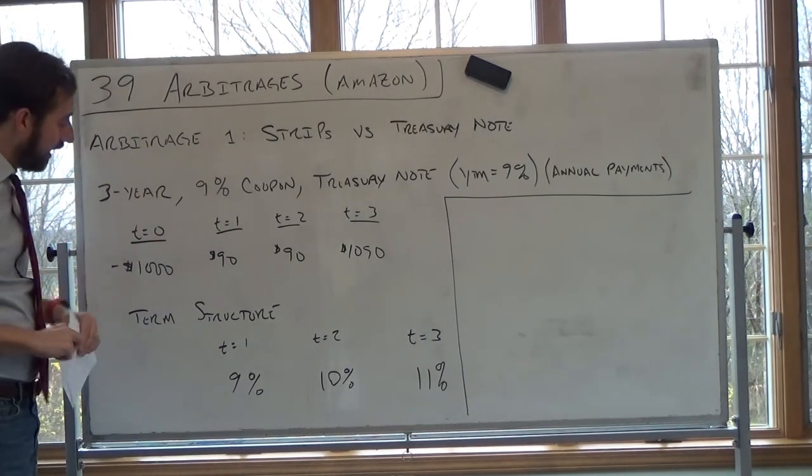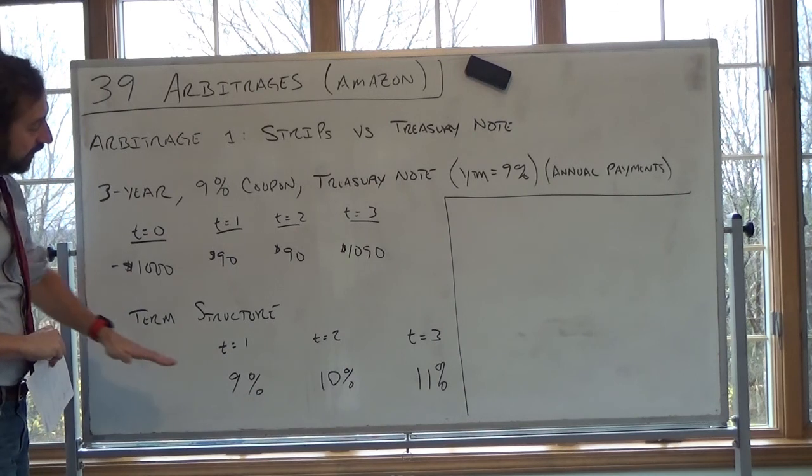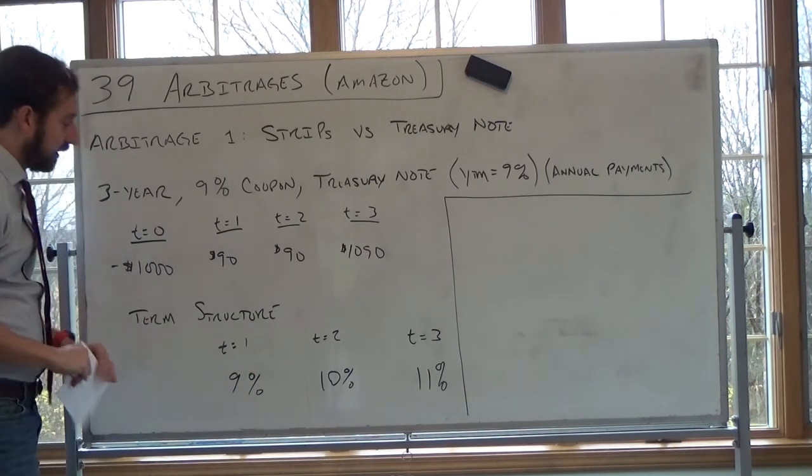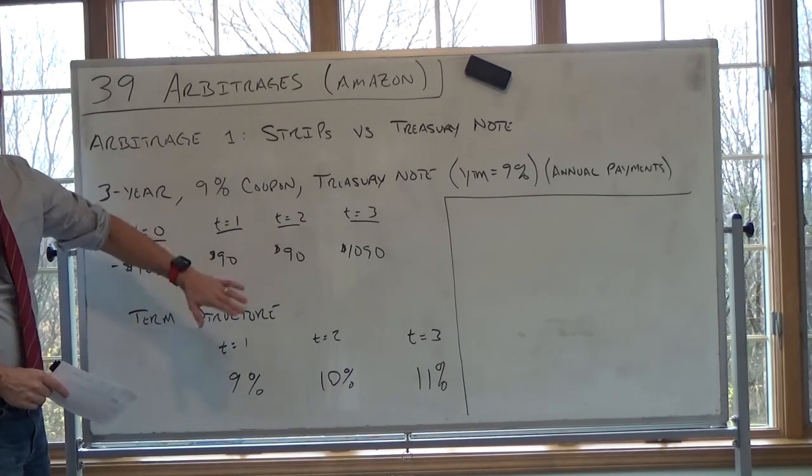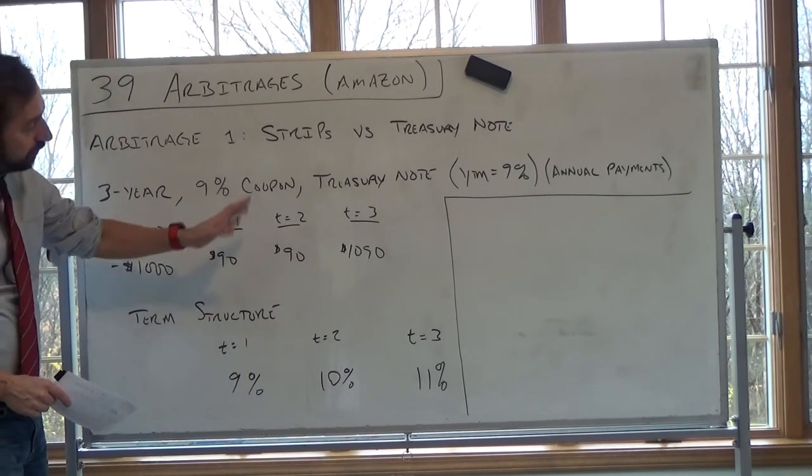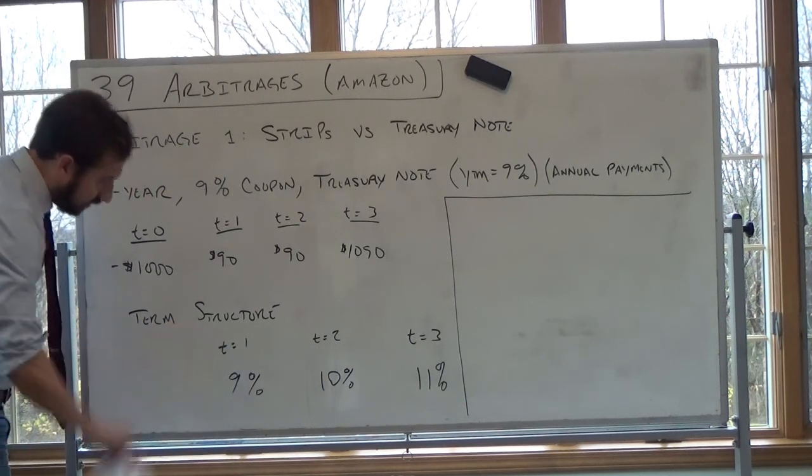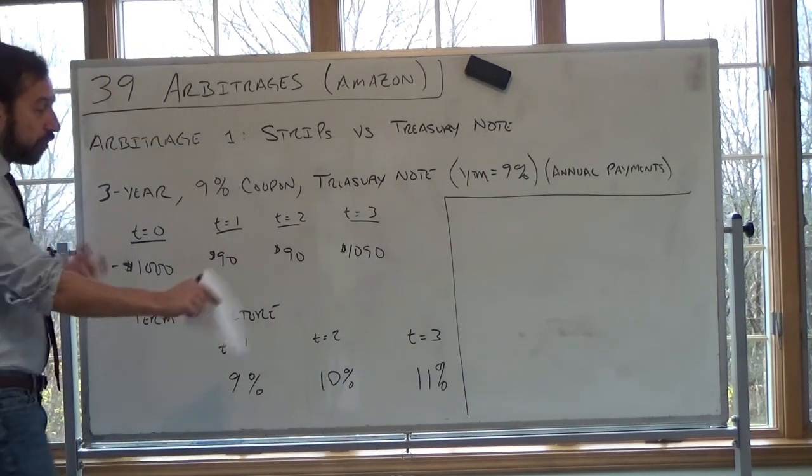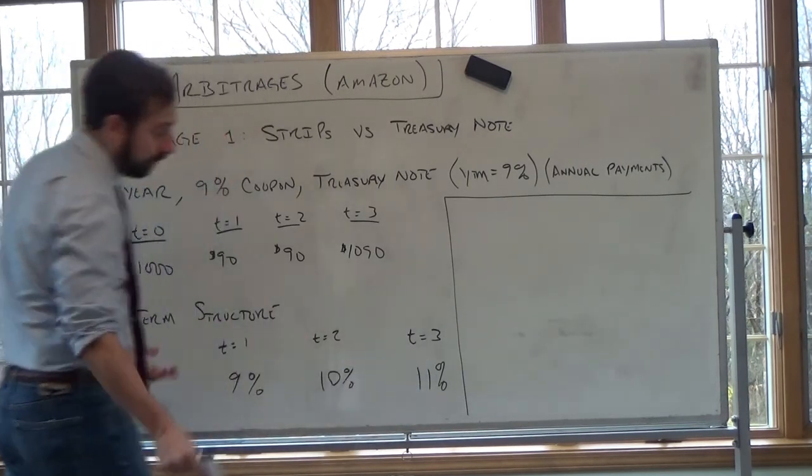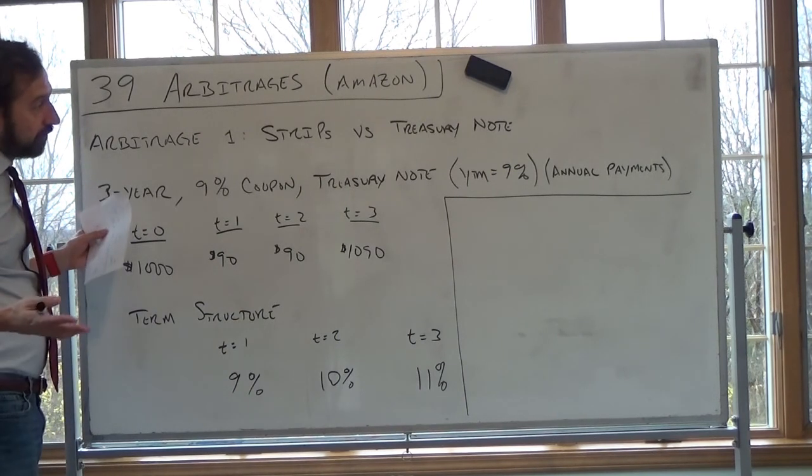So let's say we have that. And let's say we observe strip prices. And these are the yields on zero-coupon bonds. A zero-coupon bond, now keep in mind, both of these don't have any default risk. So no default risk on either of these. 9% in time one, 10% in time two, and a zero-coupon bond maturing at year three yields 11%. So there's an arbitrage here.